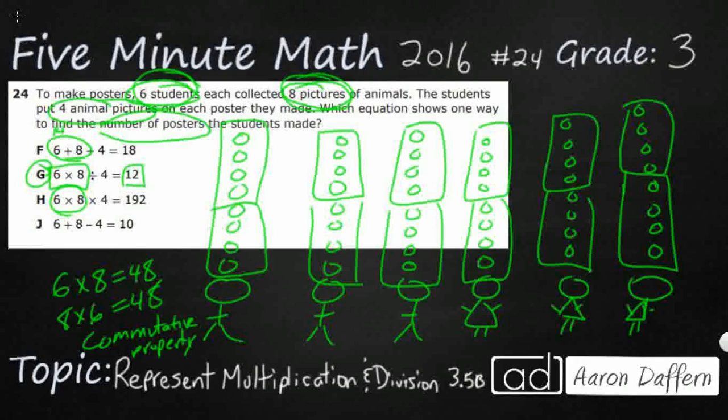And then J has got all kinds of problems. You're adding and then you're subtracting. You're not getting the correct number of original pictures, which is the first step, and that's 48. So our answer is G.